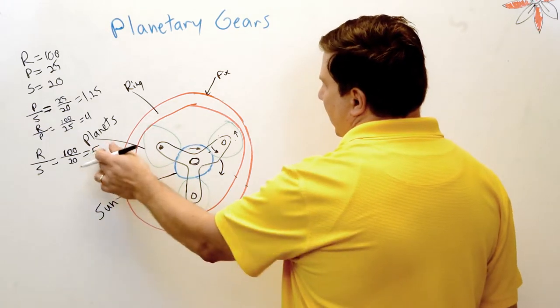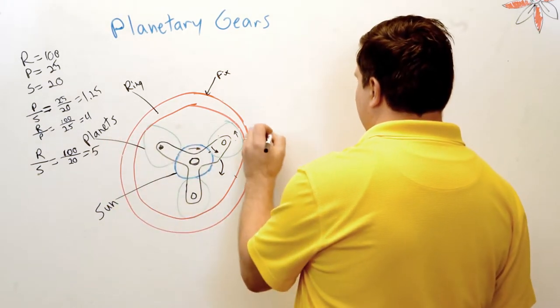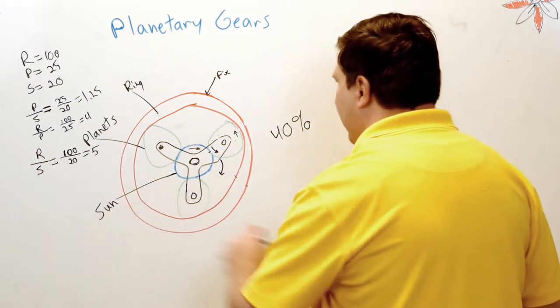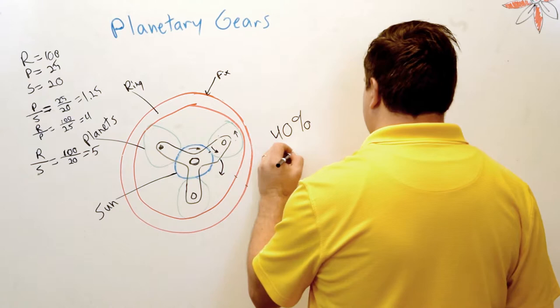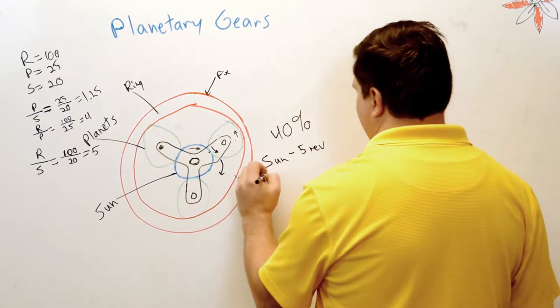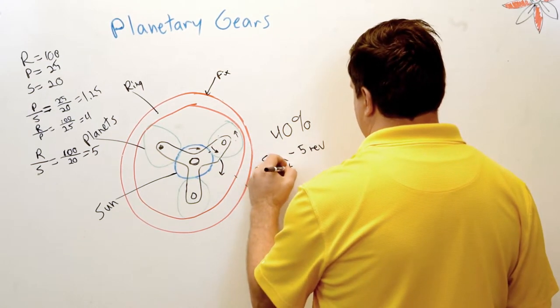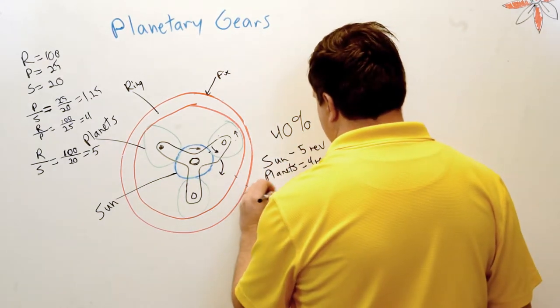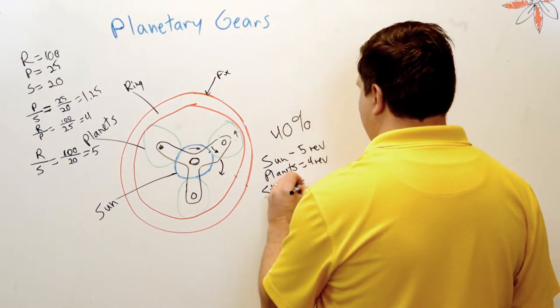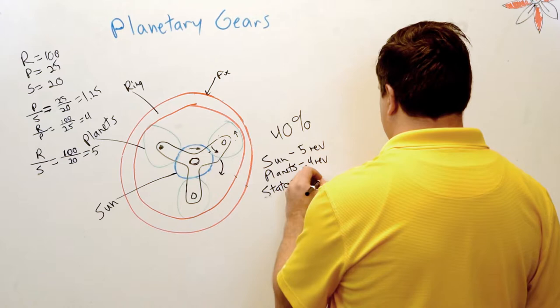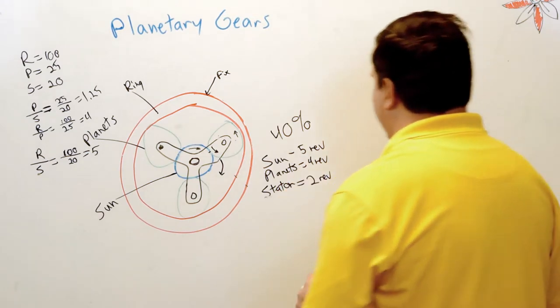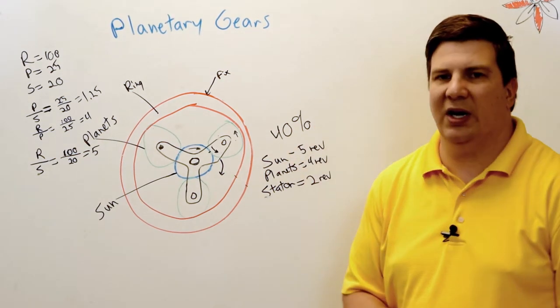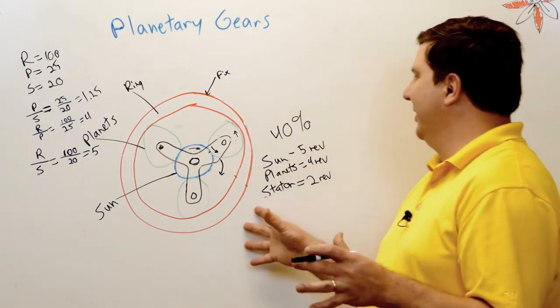So I'm only going to get half of that, which is two revolutions for every five. So essentially this moves at 40 percent. Or let me summarize this. So again, the sun, five revolutions. The planets, four revolutions. And the stator is half that, which is two revs. So two over five, 40 percent. And that's where we get that.